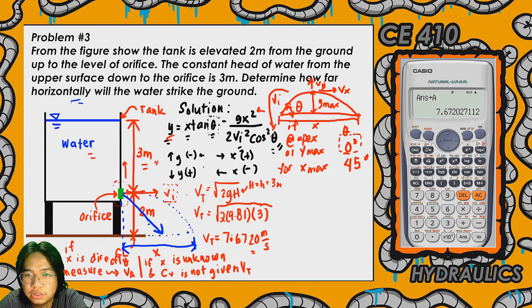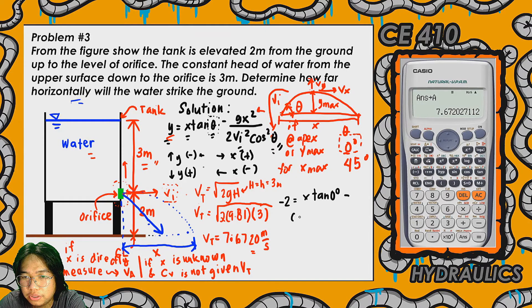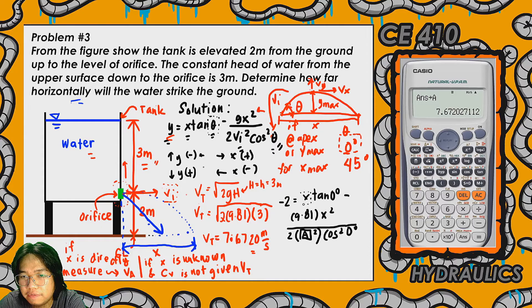Now let's plug all values into the formula. Since the orifice position is above ground level, y is negative: y = −2 meters. So we have: −2 = x·tan(0°) − (9.81·x²) / (2·Vi²·cos²(0°)), where Vi = 7.672 m/s is stored in the calculator. We'll determine the value of x using the shift-solve function on the calculator.